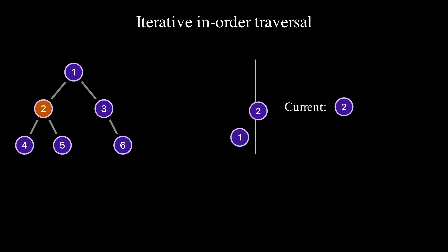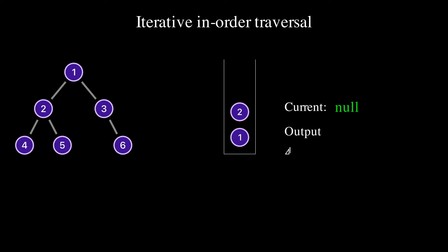Current is not null. We push node 2 to the stack and set the current to node 4. Current is still not null. We push node 4 to the stack and set current equal to the left child of node 4. Current equals null. As soon as the current is null, we pop a node from the stack, print the value to the output, and set the current to the right child of the node. We pop node 4 from the stack, print 4 to the output, and set the current to null because node 4 doesn't have a right child. Current is null. We pop node 2 from the stack, print 2 to the output, and set current to node 5 because node 5 is the right child of node 2.